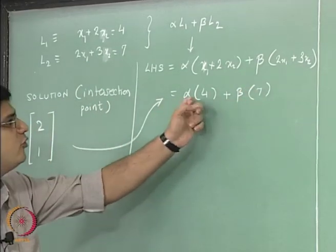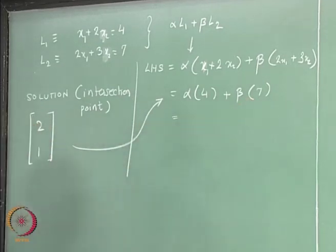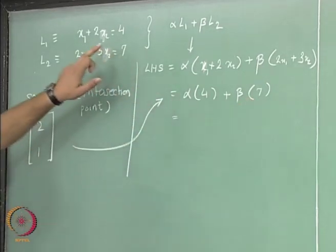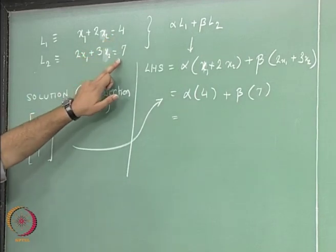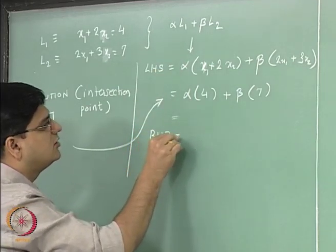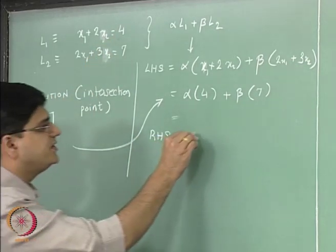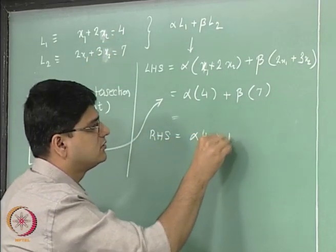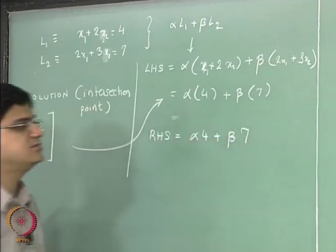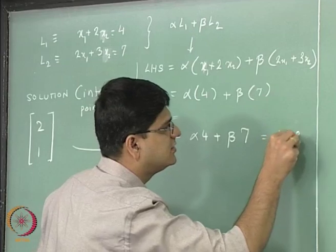We will get alpha multiplied by 2 plus 2, that is 4, plus beta multiplied by 4 plus 3, that is 7. So we have 4 alpha plus 7 beta, or alpha multiplied by 4 plus beta multiplied by 7, that is nothing but the RHS of alpha L1 plus beta L2.